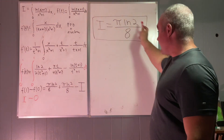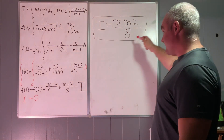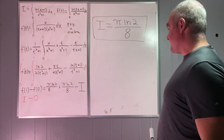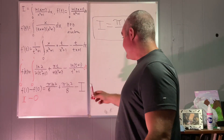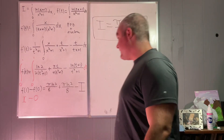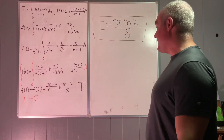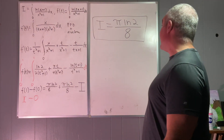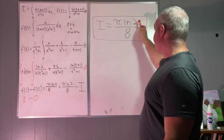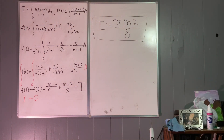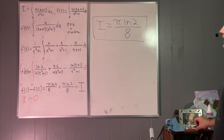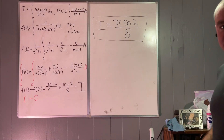To arrive at the final answer, it's just a matter of adding those two terms together, adding I to both sides of the equation, and then dividing by 2. Our original integral I equals pi times the natural log of 2, all over 8. Hope you enjoyed that.